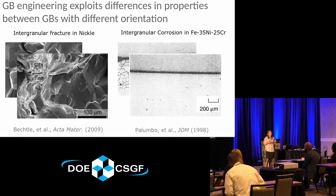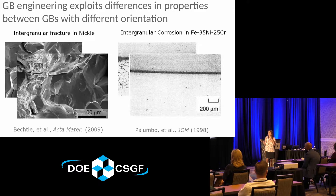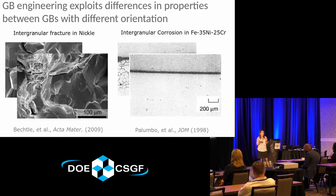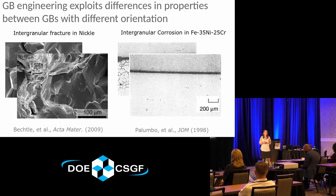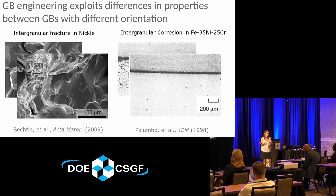There were some early successes of grain boundary engineering, but the field has kind of stagnated in recent years. The reason is that we don't actually know which grain boundaries — which orientations — are going to map to the properties that we want to see. We can't engineer a microstructure with specific kinds of grain boundaries except in a couple of very specific cases, so we need some predictive relationship that tells us what orientations of grain boundaries will give us what set of properties.